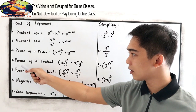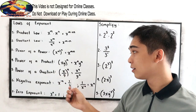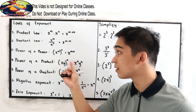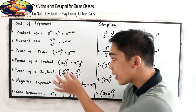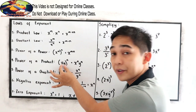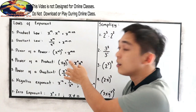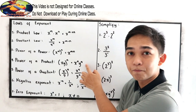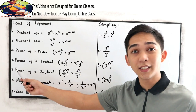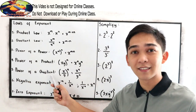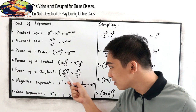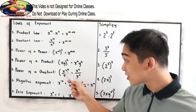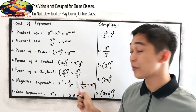The fourth law is power of a product. The quantity xy raised to n — we have a product inside the parenthesis with an exponent — gives us x raised to n times y raised to n. The fifth law is power of a quotient: a quotient raised to an exponent gives x raised to n over y raised to n.